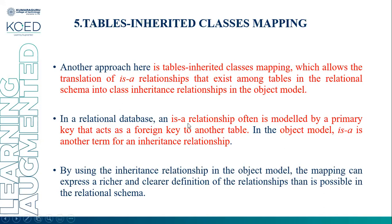In Relational Database Management System, the IS-A relationship is often modeled by a primary key that acts as a foreign key to another table. In the object model, IS-A is another term for an inheritance relationship. By using the inheritance relationship in the object model, the mapping can express a richer and cleaner definition of relationship than is possible in the relational schema.